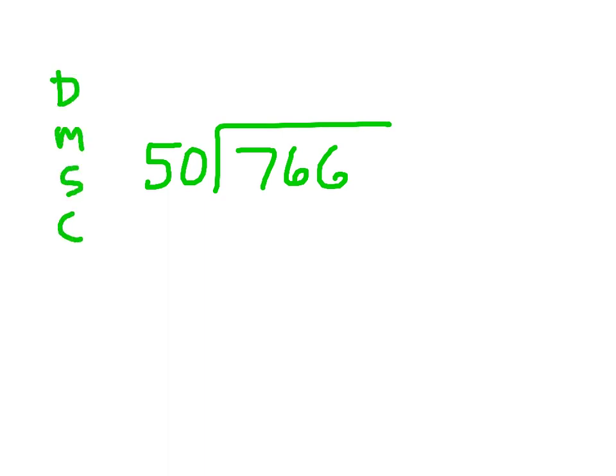But let's say we want to do that one the old-fashioned way. The DMSCB, 766 divided by 50. I'm going to put this for reference. DMSCB, divide, multiply, subtract, compare, bring down. 50 goes into 7? No, it goes into 76. Yes, one time. Notice that I'm putting my one right there. One times the 50, 50. Put that, subtract those, get 26. That is less than the 50. So I'm good to go. Bring down the 6, 266.